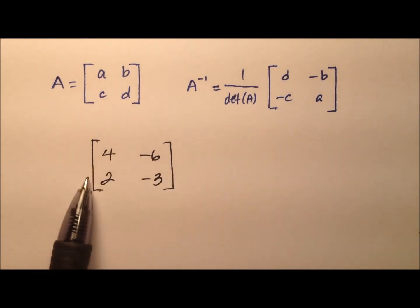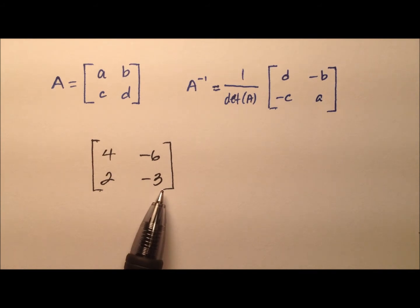In this example, we're going to take a look at this 2 by 2 square matrix. It has two rows and two columns, and we're going to try to find its inverse if possible.